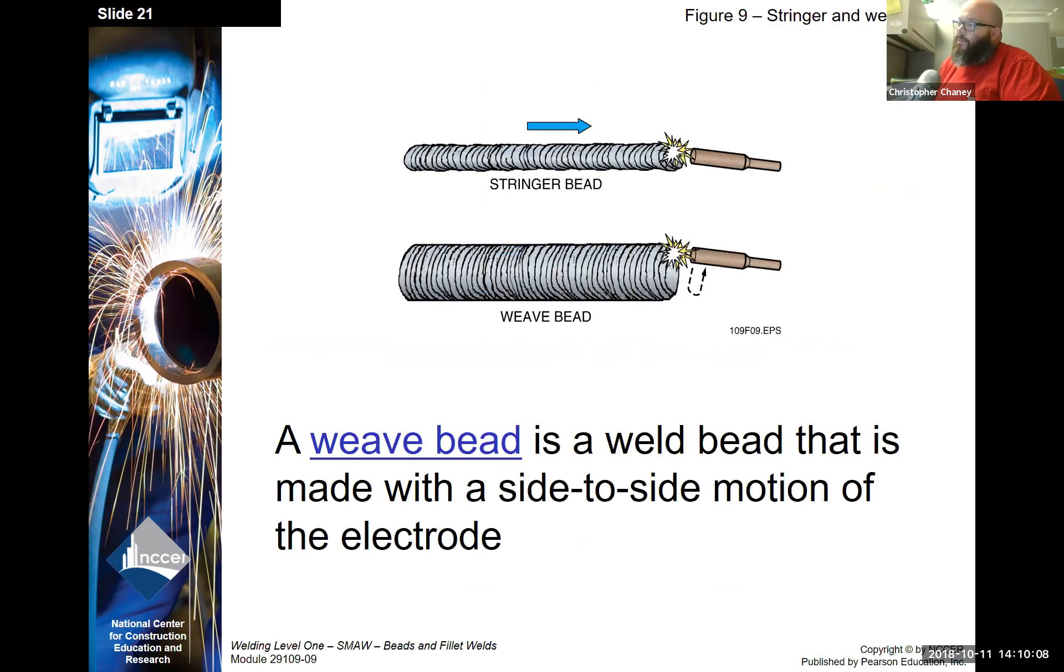A weave bead is a bead that is made with a side-to-side motion of the electrode. If you can weave and the bead looks appropriate, it's not over reinforced and there's not excessive undercut along the sides of the weld, more power to you. I really prefer that you guys start out, especially as you start gaining experience, just with stringers, especially in vertical, because it's hard enough to weld vertical and then trying to, you guys need to get some experience before you just go right into a weave bead.